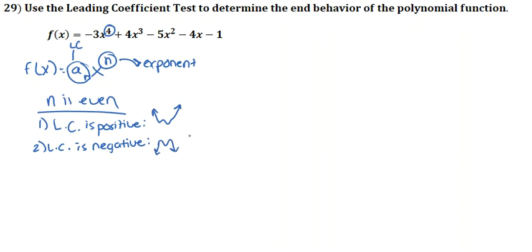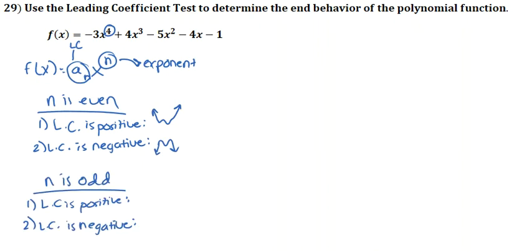If your n is odd, there are a few extra steps. If your leading coefficient is positive and your exponent n is odd, your graph is going to drop on the left-hand side and rise on the right-hand side. If your leading coefficient is negative when n is odd, your graph is going to be rising in the left corner and falling in the right corner.